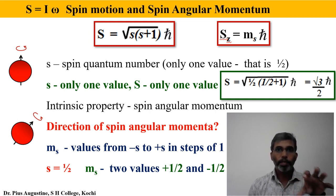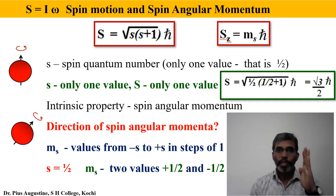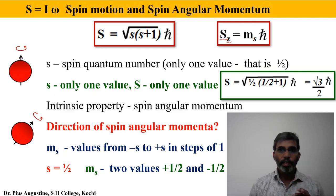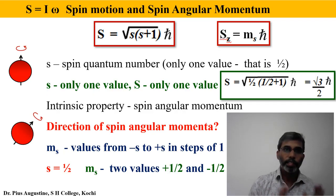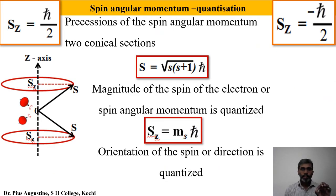Now, what about the direction or quantization of the spin angular momentum? The z-component of spin angular momentum, from the quantum mechanical solution, is S_z = m_s ħ, where m_s is the magnetic spin quantum number taking values from −s to +s in steps of 1. Since s = ½, m_s can have only two values: +½ and −½. Therefore S_z can have only two values: +ħ/2 and −ħ/2.